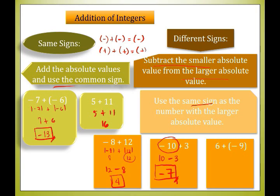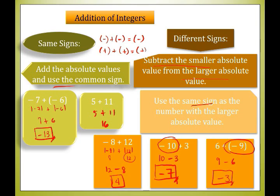Last example: 6 plus negative 9. We get the absolute values: 6 and 9. We subtract the smaller from the larger: 9 minus 6 equals 3. Since 9 is larger than 6 and 9 has a negative sign, the sum is negative 3. That's how you add integers whether they have the same sign or different signs.